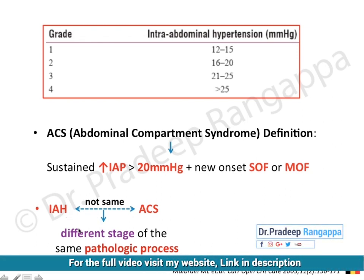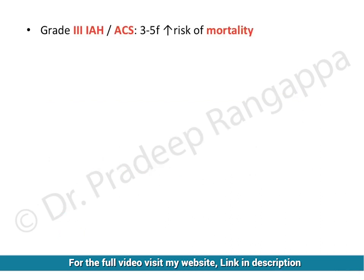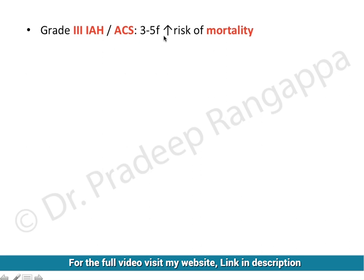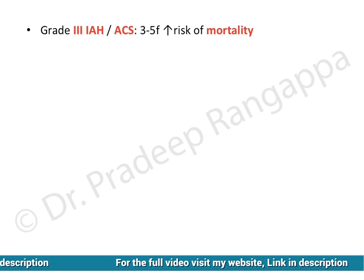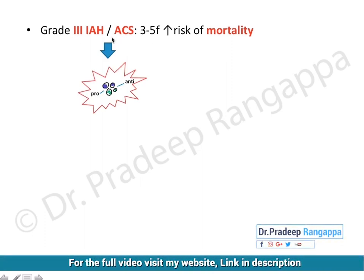These represent different stages of the same pathological process. A sustained increase in intra-abdominal pressure starts affecting multiple organs — it is a dynamic process. In terms of outcomes, when a patient has Grade 3 intra-abdominal hypertension or abdominal compartment syndrome, there can be a three to five fold increase in the risk of mortality. So intra-abdominal hypertension and abdominal compartment syndrome have a direct bearing on morbidity and mortality.